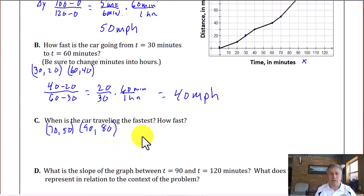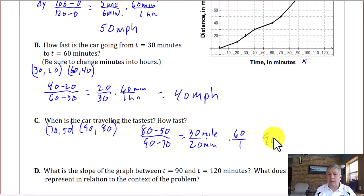I set up my slope equation, my y's over my x's. So 80 minus 50 over 90 minus 70. 30 over 20. That's 30 miles in 20 minutes. And then we convert 60 over 1. And we get 90 miles per hour.